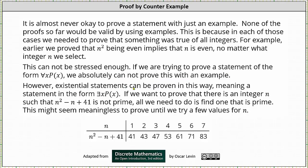However, existential statements can be proven in this way, meaning a statement in the form 'there exists an x such that p of x is true.' If we want to prove that there is an integer n such that n squared minus n plus 41 is not prime, all we need to do is find one that satisfies this.